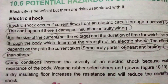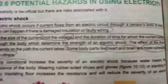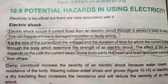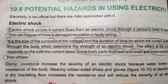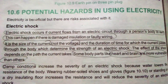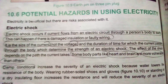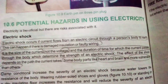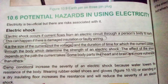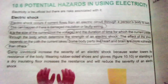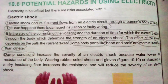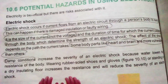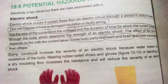Electric shock occurs if current flows from an electrical circuit through a person's body to earth. This can happen due to damaged insulation or faulty wiring. It is the size of the current, not the voltage, and the duration of time for which the current passes through the body, that determines the strength of an electric shock. Some body parts like the heart and brain are more vulnerable than others. To reduce chances of electric shock, use gloves and shoes.